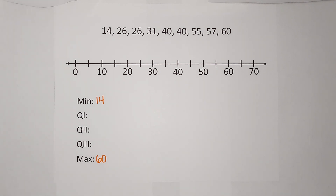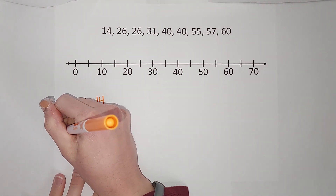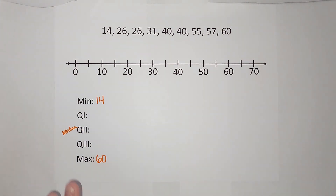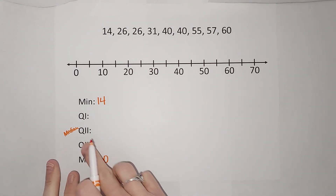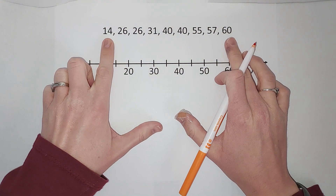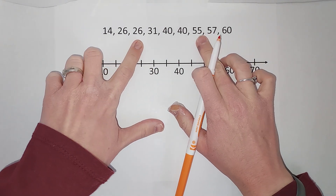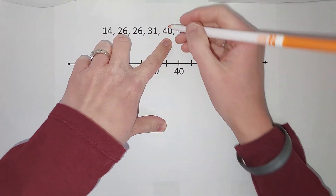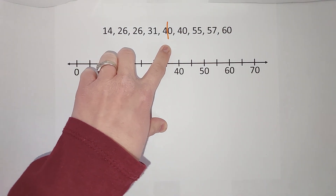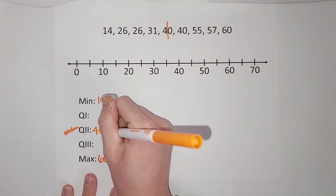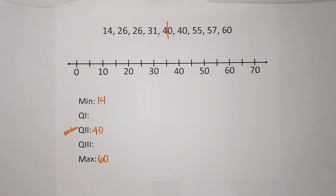Now we are going to start with the second quartile. The second quartile is also known as the median. If you need a video focusing just on finding quartiles, I'll link one in the corner. The median is found by making sure the numbers are in order and counting to the middle number. My middle number is 40 — that is my median, or second quartile.